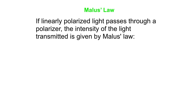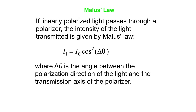If you have linearly polarized light, then we have something called Malus's Law telling us what the final intensity is. I₁ equals I_initial times cosine squared of delta theta, where delta theta is the angle between the polarization direction of the light and the transmission axis of the polarizer. If you make that angle zero, you get all the light going through. If you make it 90 degrees, none of the light comes through. In between, you get something in between.